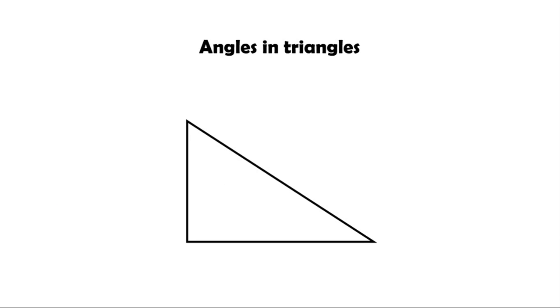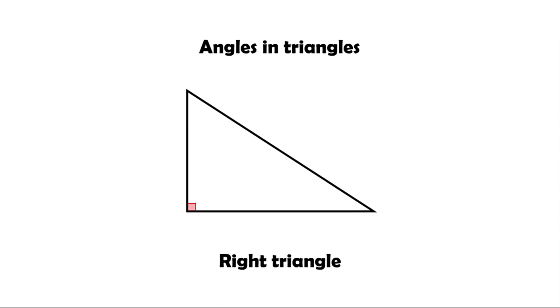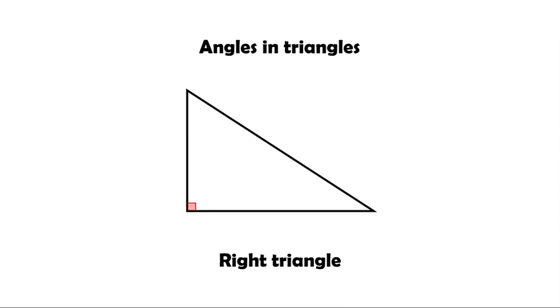Let's take a look at this triangle. Notice that this angle is a right angle. If a triangle has a right angle, then we call it a right triangle. So this triangle is a right triangle.